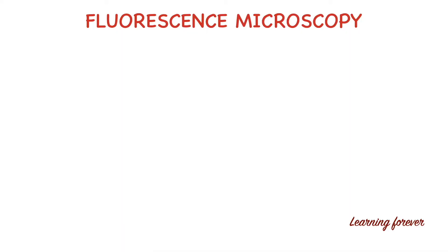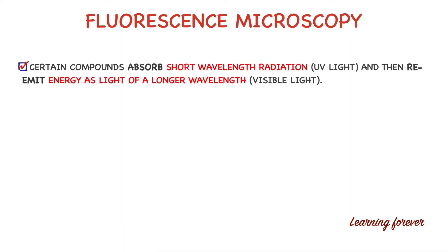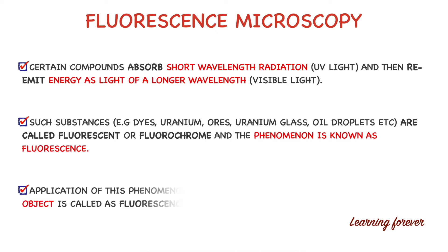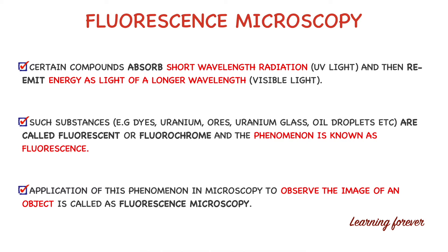First, let's see which compound is called a fluorescence compound. A compound which absorbs shorter wavelength radiation, i.e. UV light, and then re-emits energy as light of longer wavelength, i.e. visible light, is called a fluorescence compound. Such substances — for example, dye, uranium, ores, uranium glass, and oil droplets — are called fluorochrome, and the phenomenon is known as fluorescence. The application of this phenomenon in microscopy to observe the image of an object is called fluorescence microscopy.